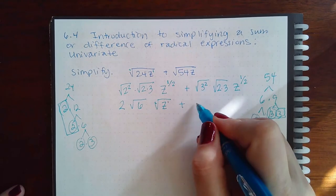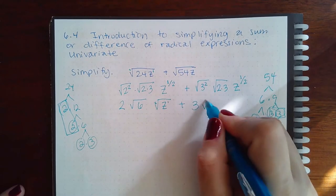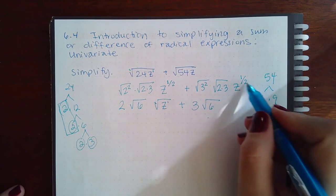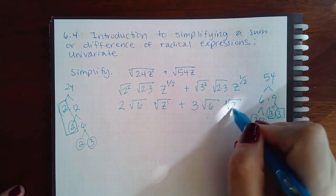Here, these cancel and I get 3. Those I'm going to multiply together. And this, again, does not reduce, so I'm just going to put it back in its radical form.